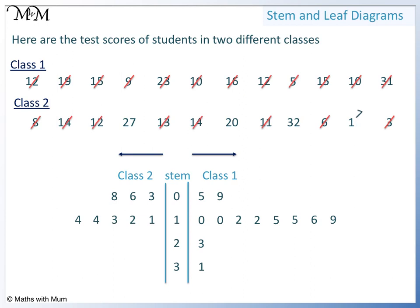Then 17. Values with 2 tens are 20, shown with a 0, and we also have 27. For values with 3 tens, we just have 32.